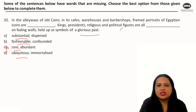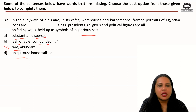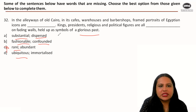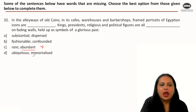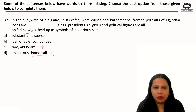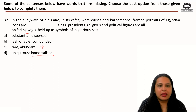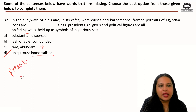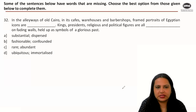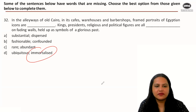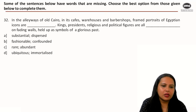For the second blank, kings, presidents and political figures are all dashed on fading walls. 'Confounded' means confused — that doesn't fit. The hint in the sentence is that they appear in cafes, warehouses, and barbershops everywhere, meaning they are ubiquitous. The portraits are placed there to immortalize these figures — so the glorious past lives on forever. The correct answer to this question is option D.